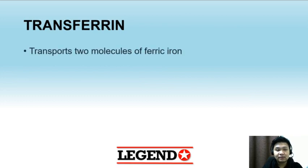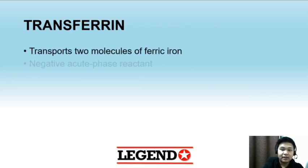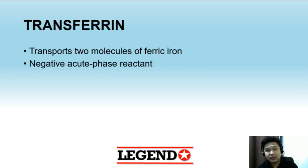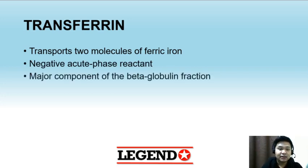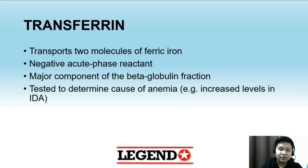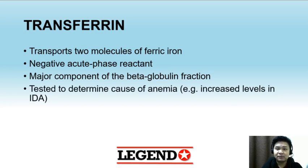The next protein is transferrin. Transferrin transports two molecules of ferric iron. It is a negative acute phase reactant, meaning in inflammatory states, transferrin levels decrease. It is a major component of the beta-globulin fraction and is tested to determine the cause of anemia. In iron deficiency anemia, there are increased levels of transferrin.